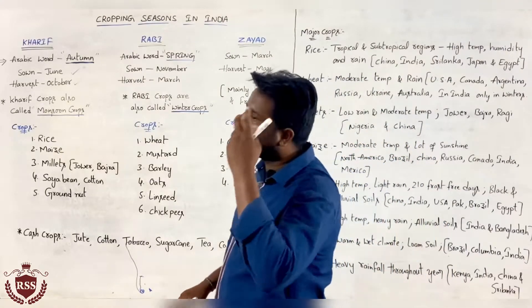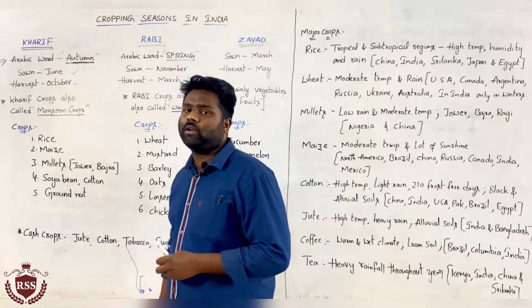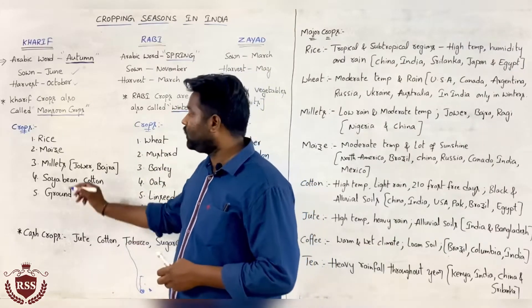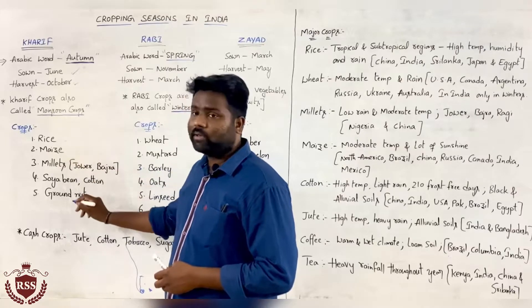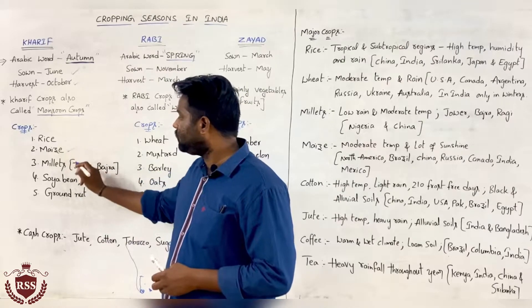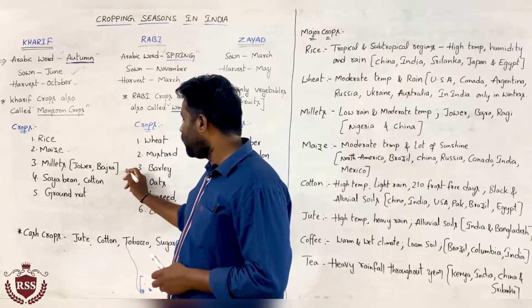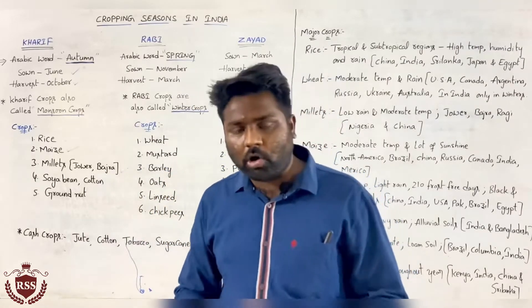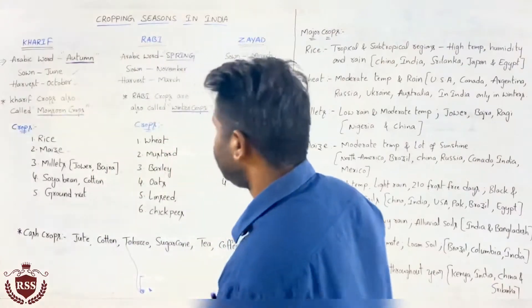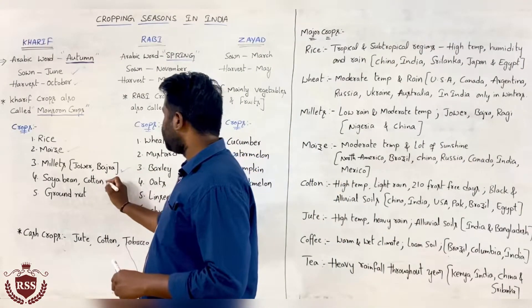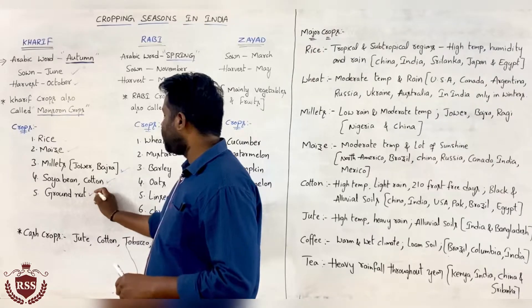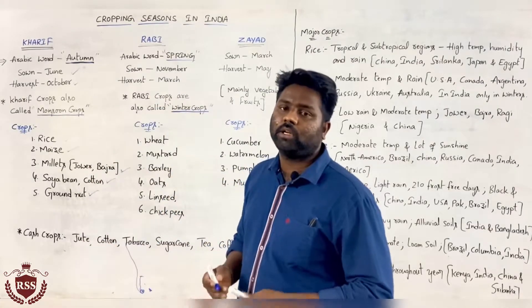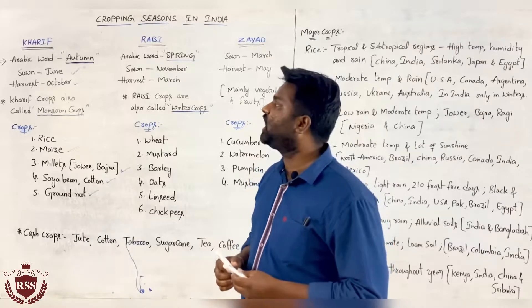The crops harvested in the Kharif season are rice, maize, millets, jowar, bajra, soya bean, cotton, and groundnuts. These are all the crops harvested in the Kharif season.